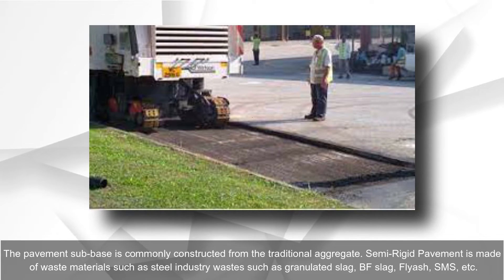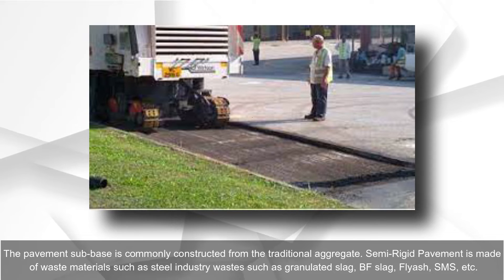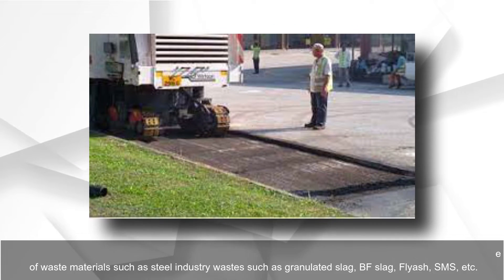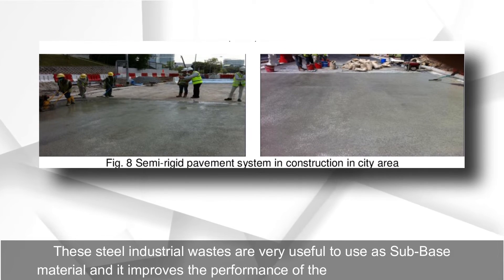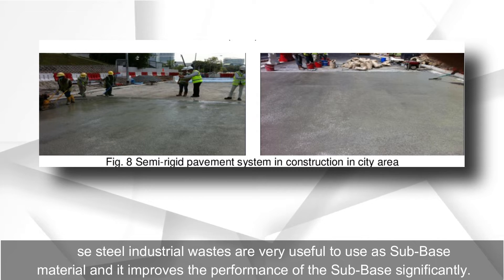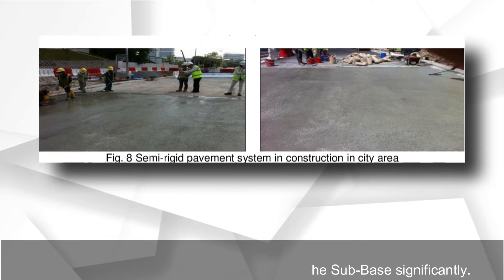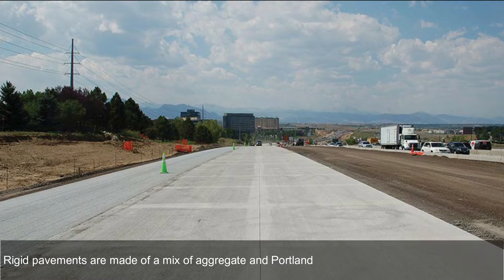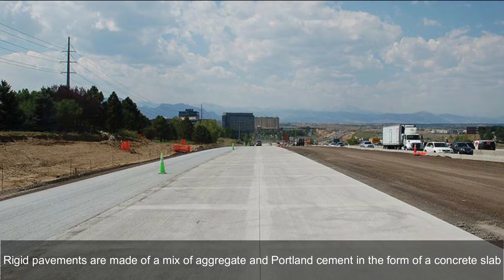While the pavement sub-base is commonly constructed from traditional aggregate, semi-rigid pavement is made of waste materials such as steel industry waste — granulated slag, BF slag, fly ash, SMS, etc. These steel industrial wastes are very useful as sub-base material and significantly improve the performance of the sub-base.